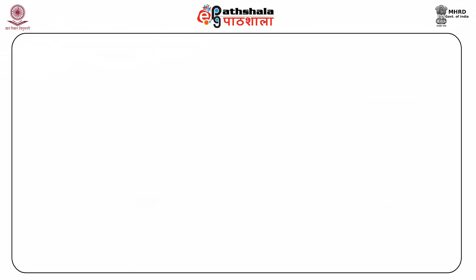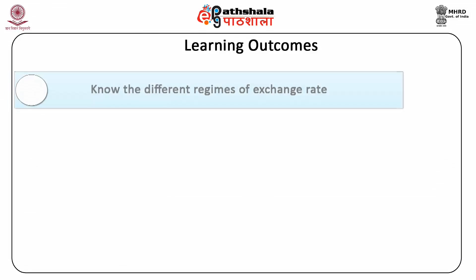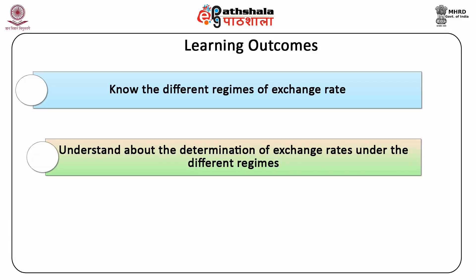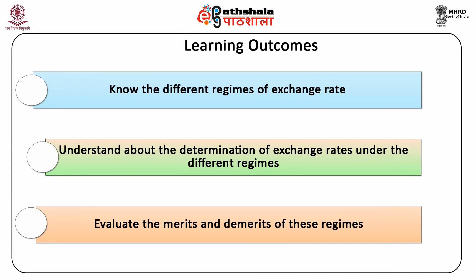The demand for foreign exchange occurs. There are three systems or regimes of exchange rate: the gold standard, fixed exchange rate and flexible exchange rate. After completing this module, you shall be able to know the different regimes of exchange rate, understand the determination of exchange rates under the different regimes, and evaluate the merits and demerits of these regimes.